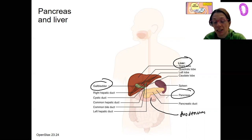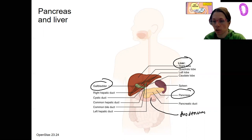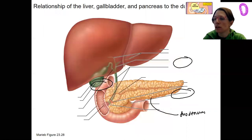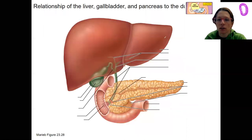The pancreas you've seen as an endocrine organ, producing hormones. It's also going to produce digestive enzymes. So let's look at this more closely here.